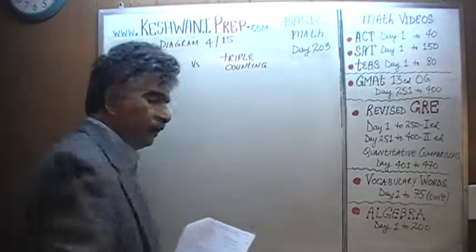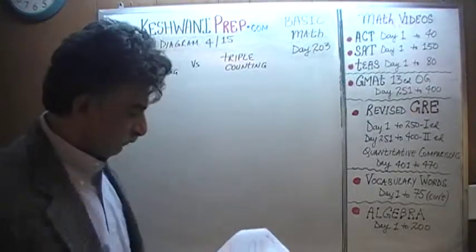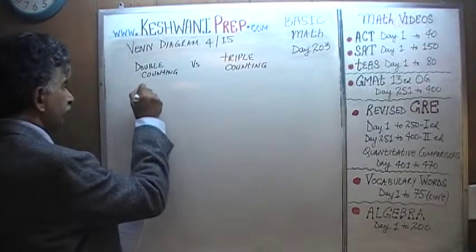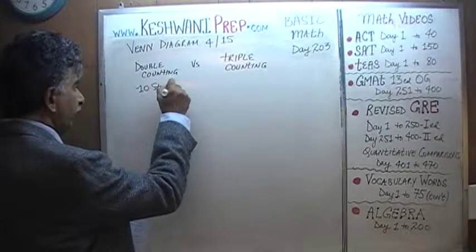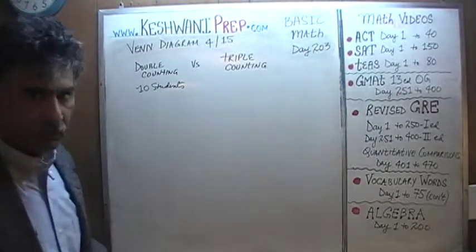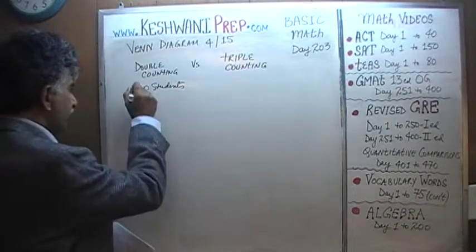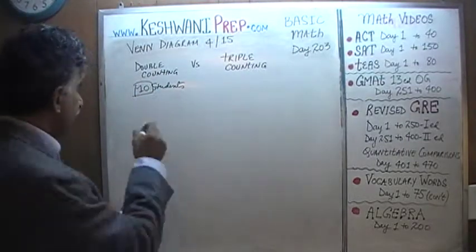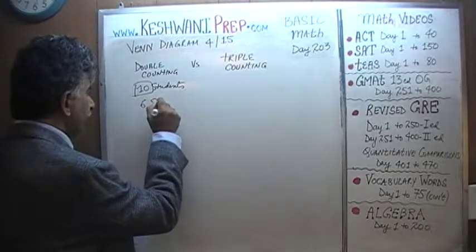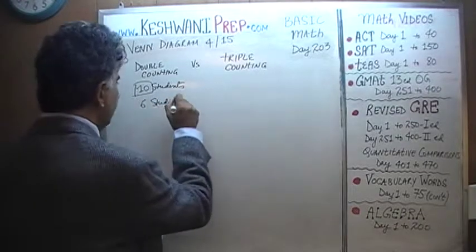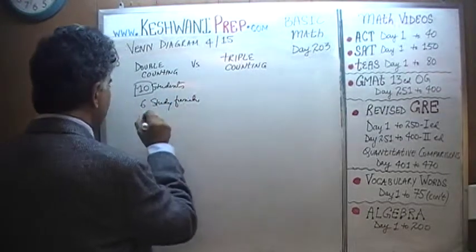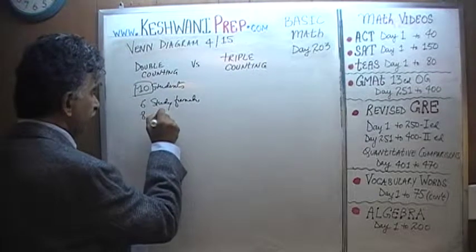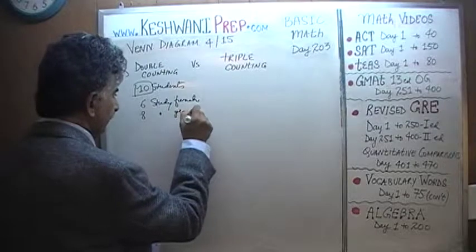Double counting is what we typically encounter because it's a simpler scenario. We are going to have 10 students. We know that there are 10 students total. In this group of 10 students, we are told that 6 of them study French. And we are further told that 8 of the students out of these 10 study German.